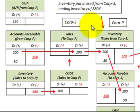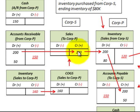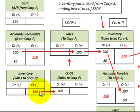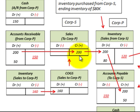Looking at an example using a flow diagram: Corporation S had sales of $200,000 that they sold to Corporation P. Those sales moved into Corporation P's inventory account for $200,000. Corporation S took $160,000 out of their inventory and transferred it into cost of goods sold. So the cost of goods sold for the $200,000 worth of sales was $160,000.